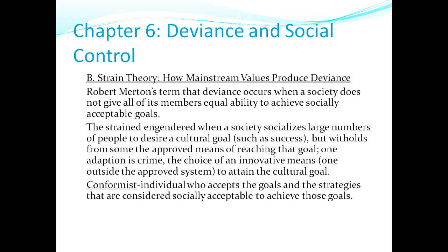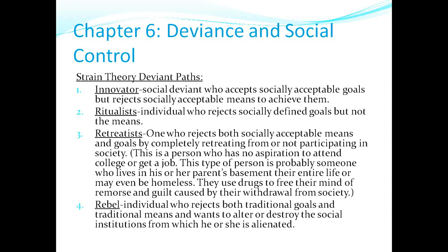Those who commit crime — they want the stuff but they choose an innovative means outside the approved system. To attain a cultural goal like success, some people adapt by doing crime instead of going the approved way. Be familiar with the deviant paths: the innovator accepts socially acceptable goals but rejects the legitimate means to achieve them — like someone who sells drugs instead of going to school.